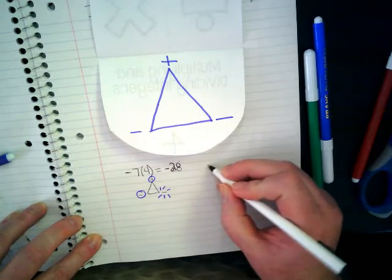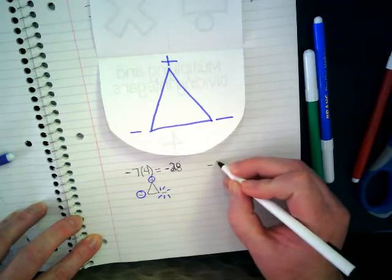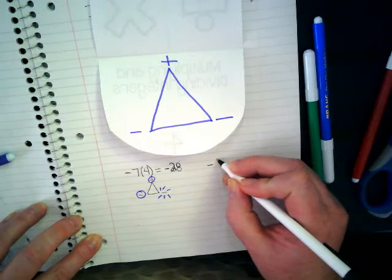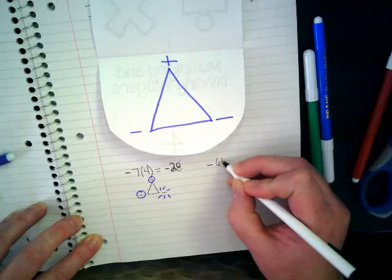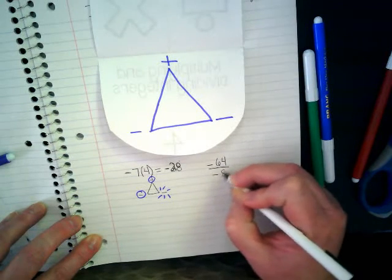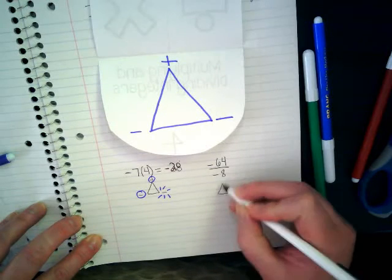This also works with division. If I have negative 64 and I'm dividing it by negative eight. Let's draw our triangle again.